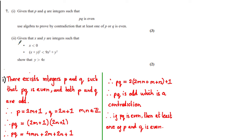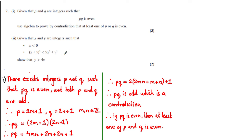The last part says: given that x and y are integers such that x is strictly less than 0 and (x + y)² is strictly less than 9x² + y², show that y is greater than 4x. This is for 2 marks. This is a proof by mathematical deduction, where we deduce the inequality from the two given statements.